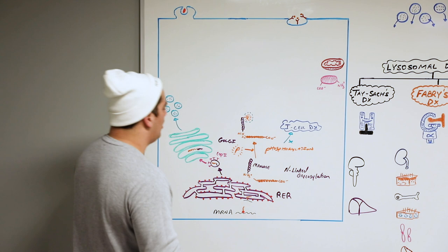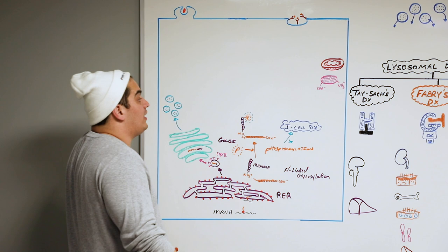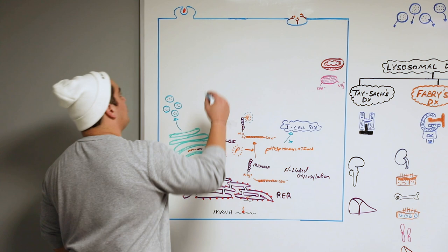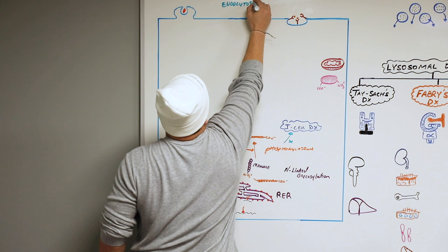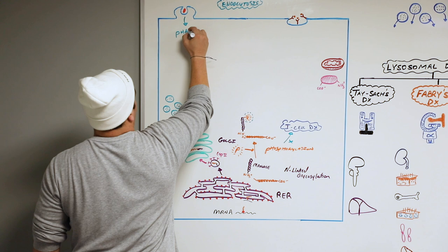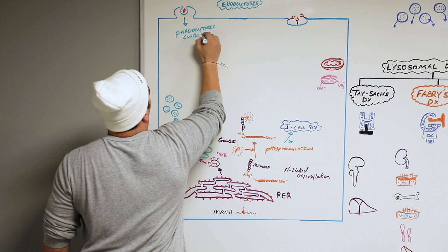Now that we've made our lysosomes, we need to know what these little buggers do. There's a very important process called endocytosis — the process by which you bring substances or macromolecules into the cell. There are two main types important with respect to lysosomes. The first one is called phagocytosis, which is very important within white blood cells — macrophages and neutrophils.